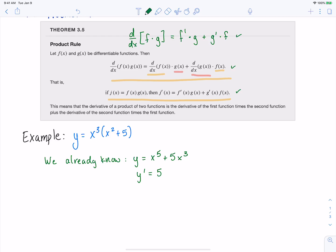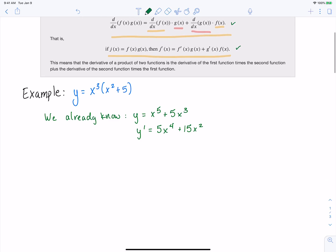Then we can take the derivative with the power rule, and we will get 5x⁴ + 15x². So now let's use the product rule to show that we get the same thing as what we get from when we use the power rule that we've known before. So just as a reminder here,